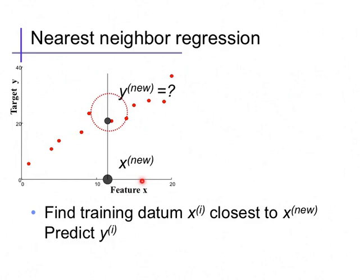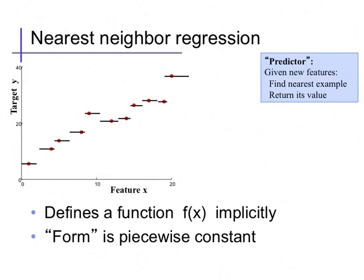And predict whatever that closest point's value Y is. So this is basically a memorize and regurgitate kind of procedure. If we follow that procedure for every possible X, we'll trace out a set of predictions that implicitly defines a function mapping X to Y. You can notice the properties of this function. It's flat, constant, near any training example.